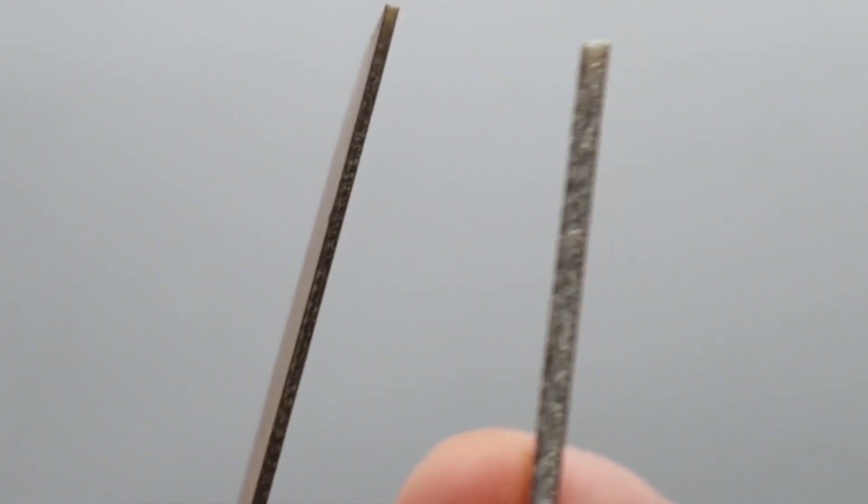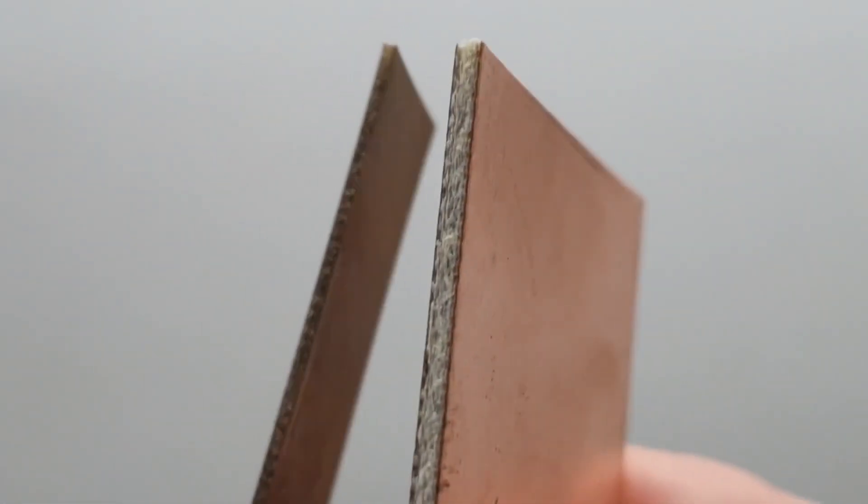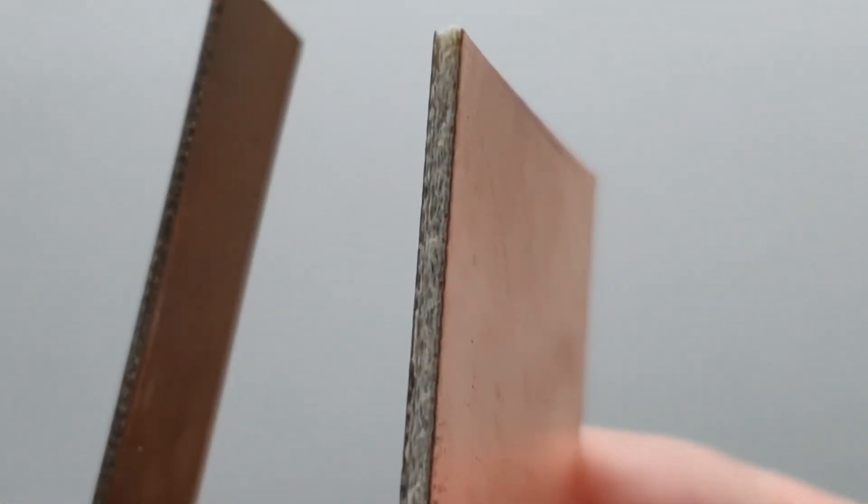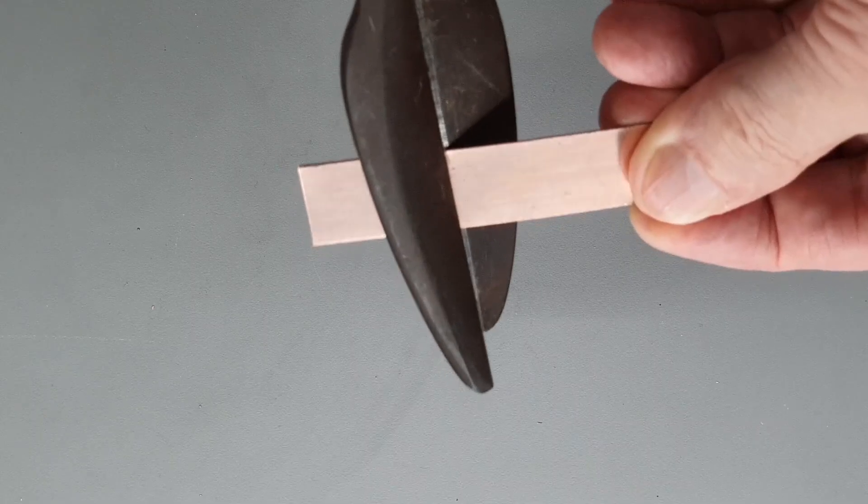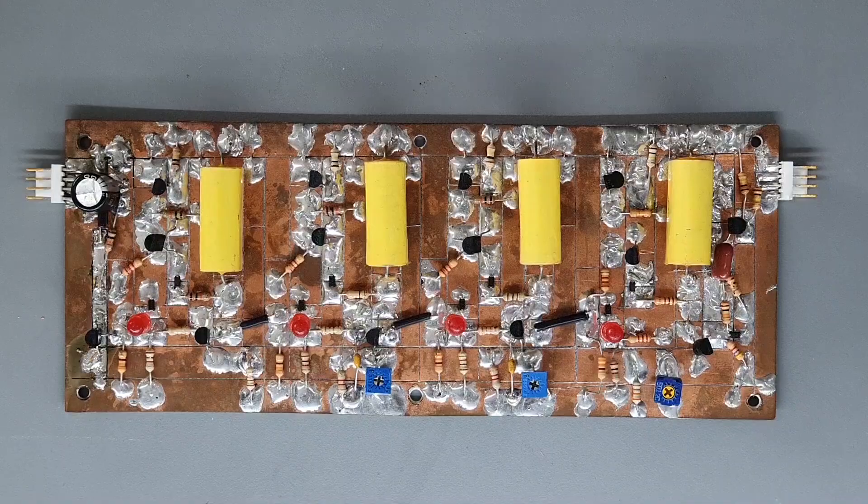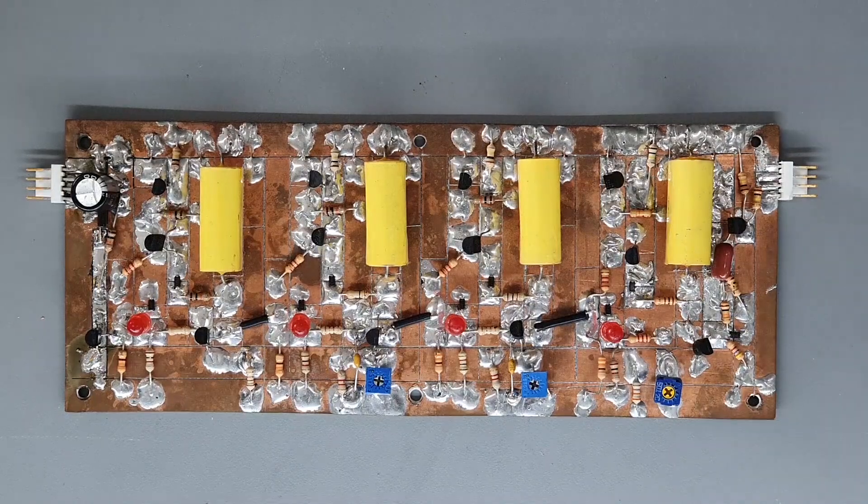I always have a big stock of both 1/32nd inch and 1/16th inch double clad FR4 PC board material. The thin stuff is great for small adapter boards and modules that you intend to stick on a bigger board. It's also really easy to cut. The thicker 1/16th material is great for larger boards.